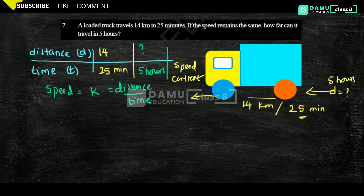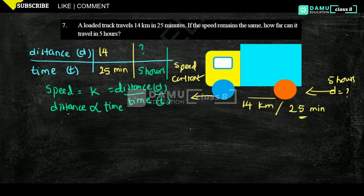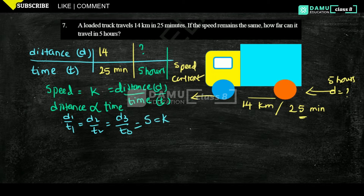Distance and time are in direct proportion, so d divided by t is constant. That means d1 by t1 equals d2 by t2 equals d3 by t3, all equal to a constant k. This confirms speed is constant.